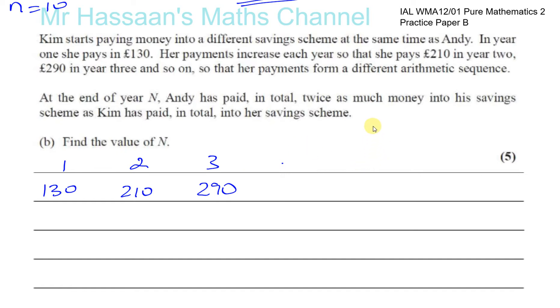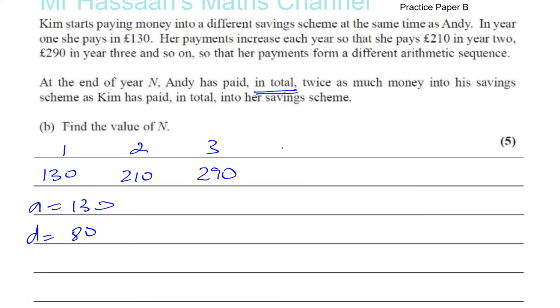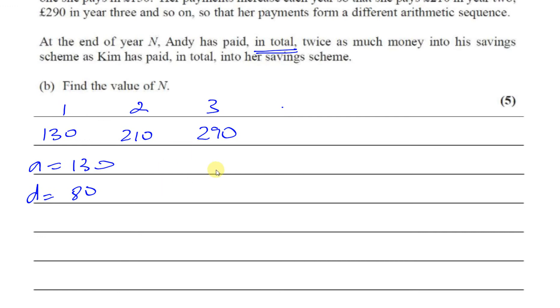The payments form a different arithmetic sequence. At the end of year N, Andy has paid in total twice as much money into his savings scheme as Kim has paid into her savings scheme. Find the value of N. Her first term is £130, her common difference is 210 - 130 = £80. We're looking for the sum.